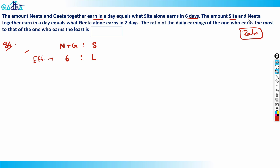Now it says the amount Sita and Nita together earn in a day equals what Gita alone earns in two days. So Gita takes two days to earn what Sita and Nita earn in one day — meaning Sita and Nita combined are twice as efficient as Gita. So the efficiency ratio of (Sita + Nita) : Gita = 2 : 1.